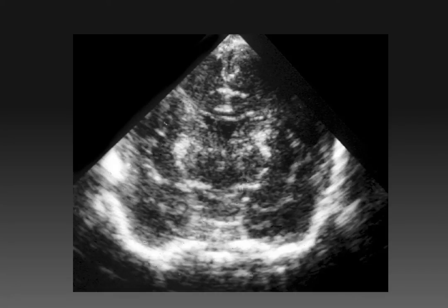Here is another infant who has brightly echogenic symmetric lesions in the basal ganglia. This child is now four weeks post hypoxic ischemic injury, and these lesions gradually appeared over the last week. At autopsy, when this child died two days later, these areas represented focal gliosis. We do not generally see gliosis in premature infants; this is a phenomenon that is only seen in term or near-term infants.